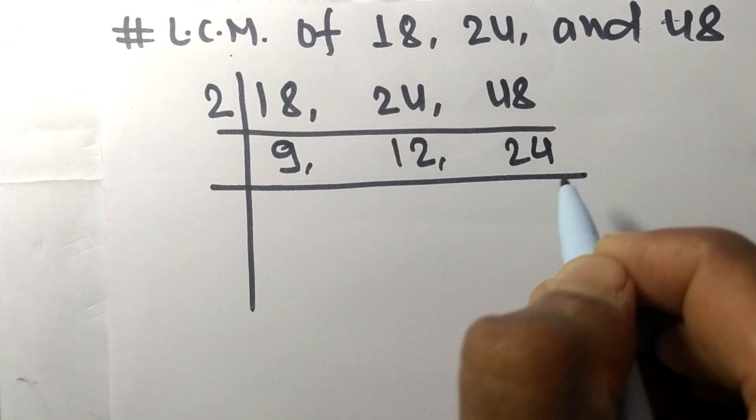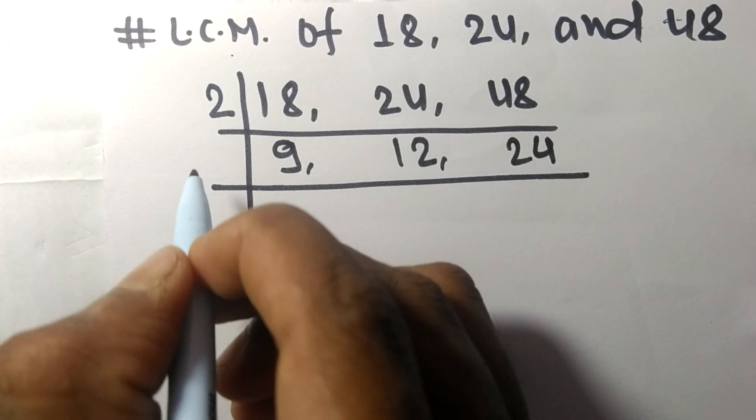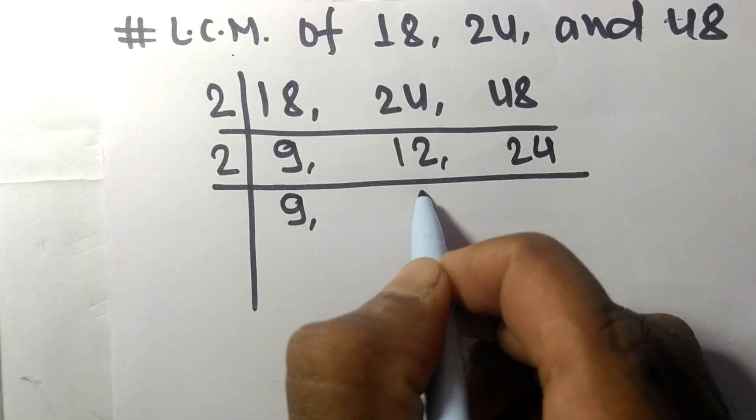Now 12 and 24 are divisible by 2. 9 is not divisible so it stays the same. 2 times 6 equals 12, 2 times 12 equals 24.